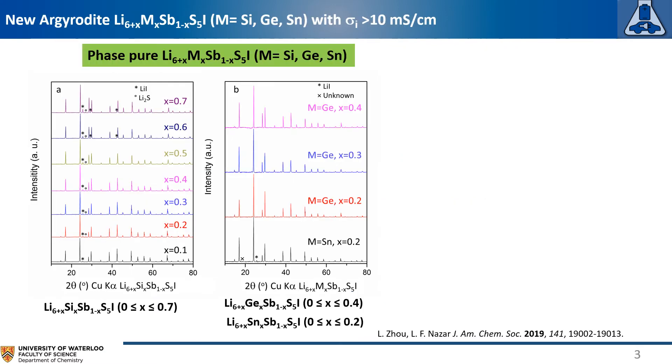Here we have successfully synthesized a new series of antimony argyrodite solid electrolyte, as the XRD pattern shows. Substitution of 5+ antimony with 4+ cations like silicon, germanium, and tin leads to high ionic conductivity.